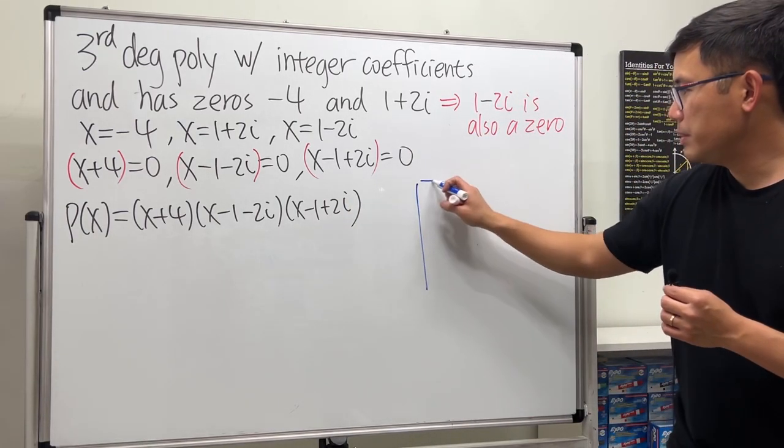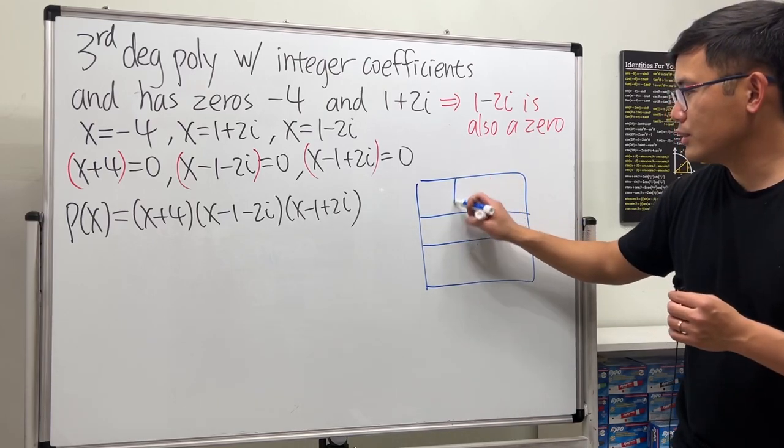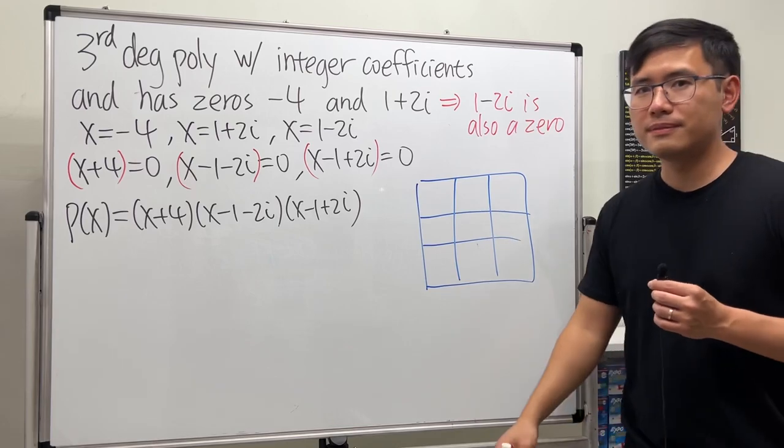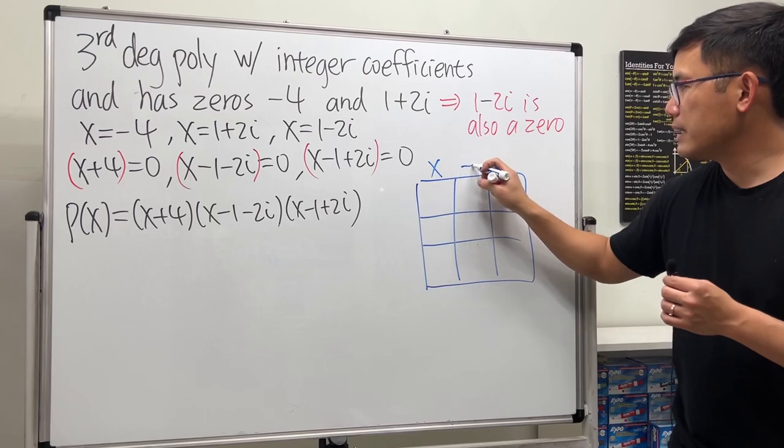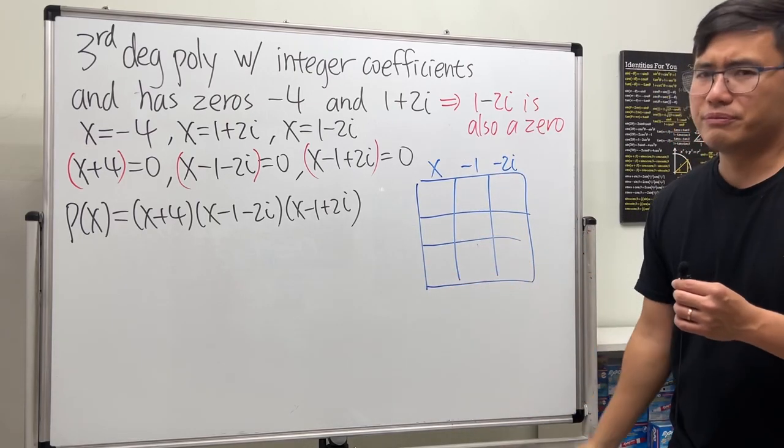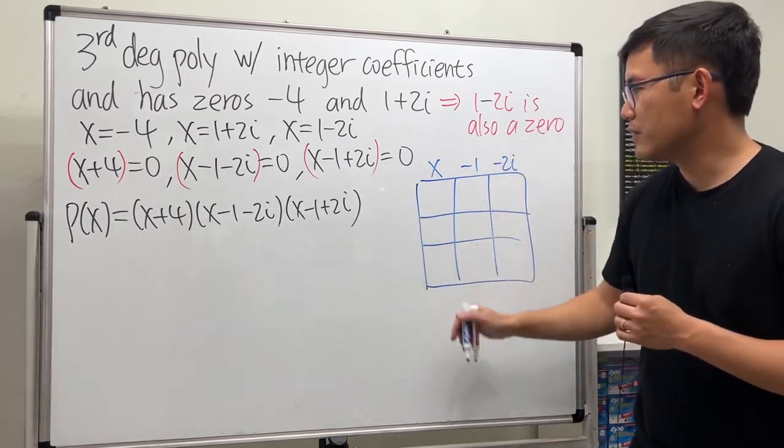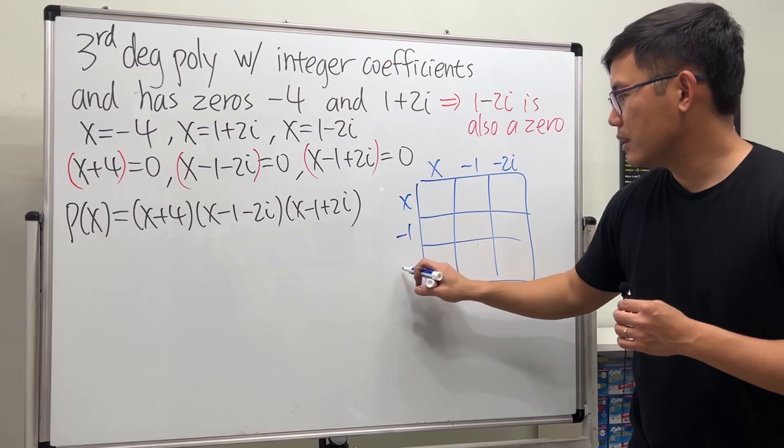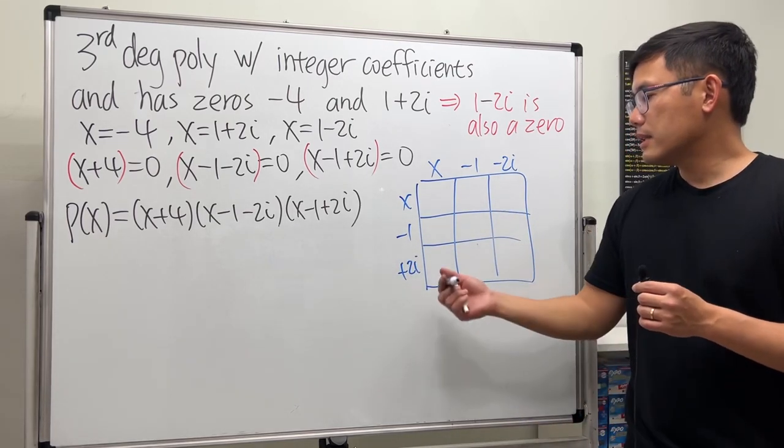The best way to multiply three terms by three terms is the box method or tic-tac-toe method. Draw the tic-tac-toe boxes, put x-1-2i on top and x-1+2i on the side. Let's go ahead and get going.